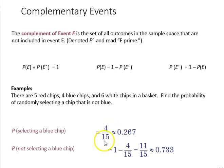So if we take 4 over 15, we know the probability of selecting a blue chip is 0.267, and therefore the complementary event not selecting a blue chip is going to be 1 minus that probability, or 0.733.